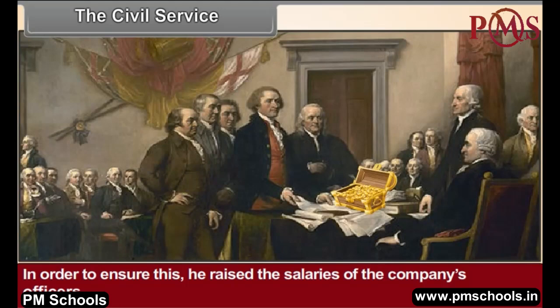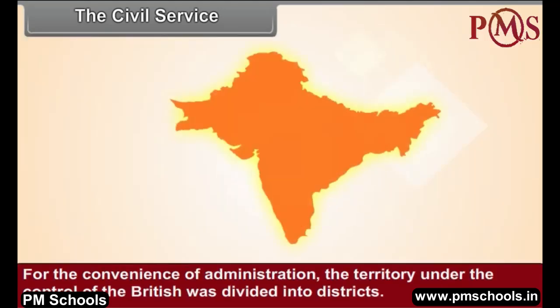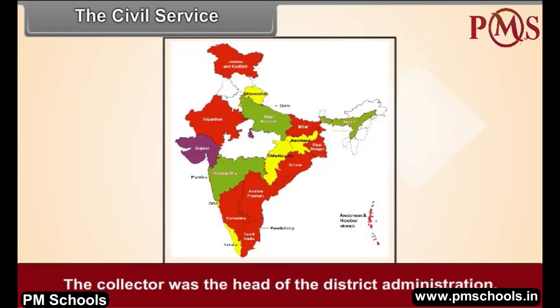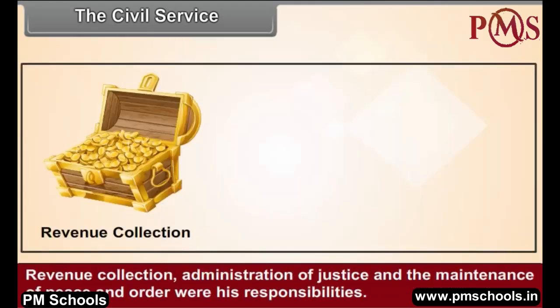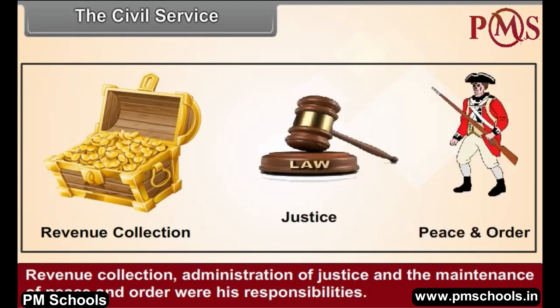For the convenience of administration, the territory under the control of the British was divided into districts. The collector was the head of the district administration, responsible for revenue collection, administration of justice, and the maintenance of peace and order. Officers were recruited to the Indian civil services through a competitive examination.